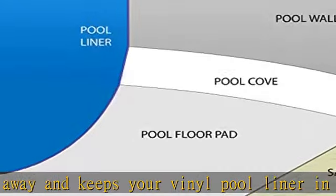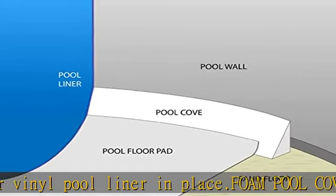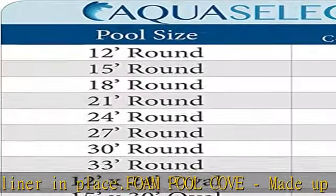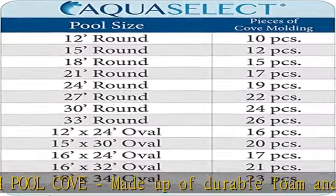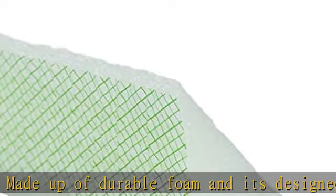each piece comes with an adhesive backing. Before you install your pool liner, simply peel and stick each cove to the inside bottom of the pool wall. It doesn't get any easier than that.